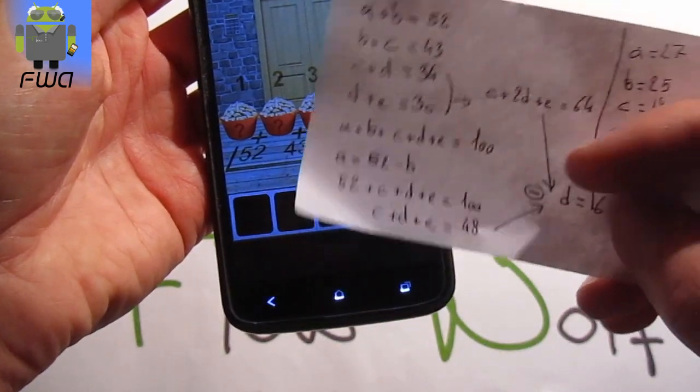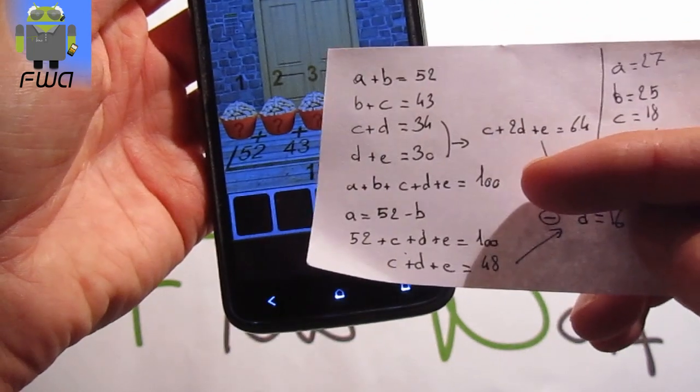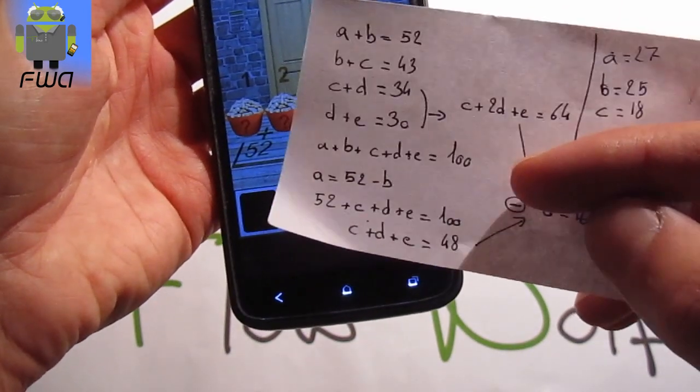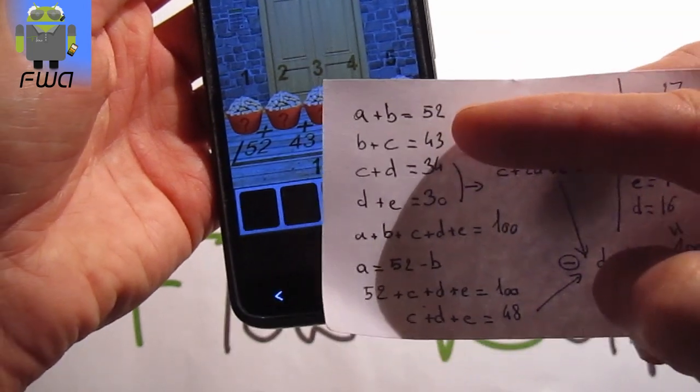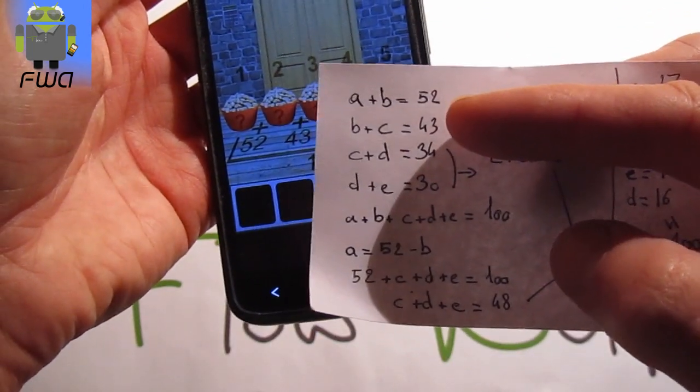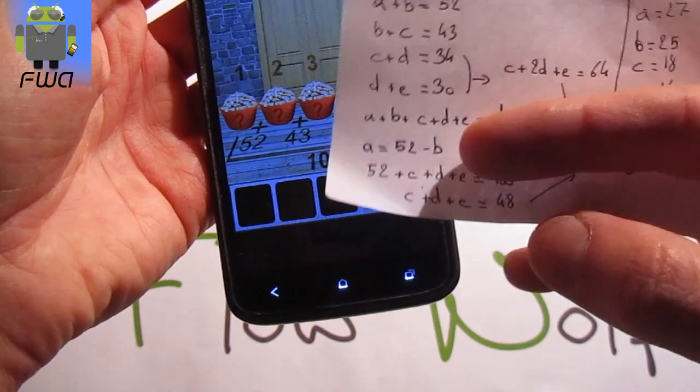Thanks to that we get a plus b plus c plus g plus e equals 100. Okay, we have to switch this equation with a equals 52 minus b. This is this line just there.